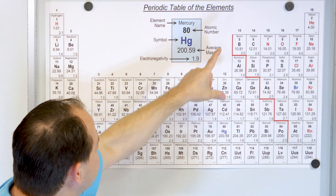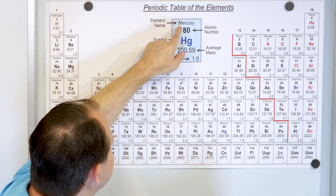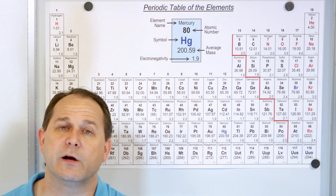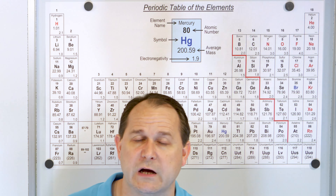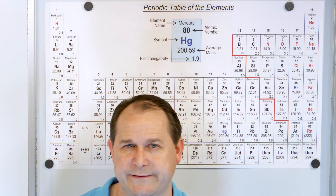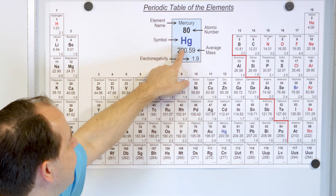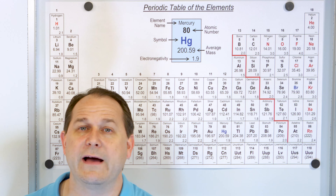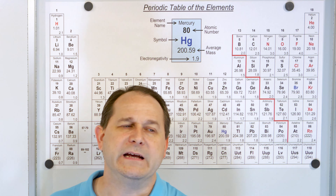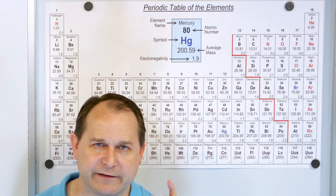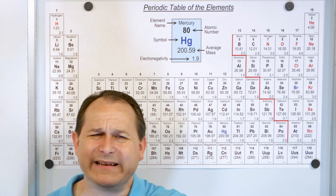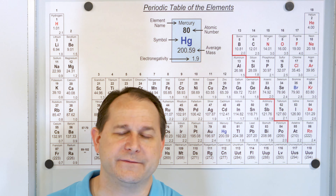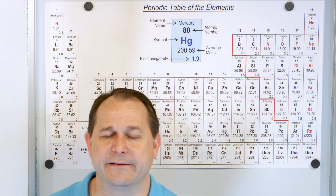On every square we have the name of the element, the atomic number — which is the number of protons in the nucleus — and the average atomic mass. The atomic mass is the weighted average of all the different isotopes of that element.